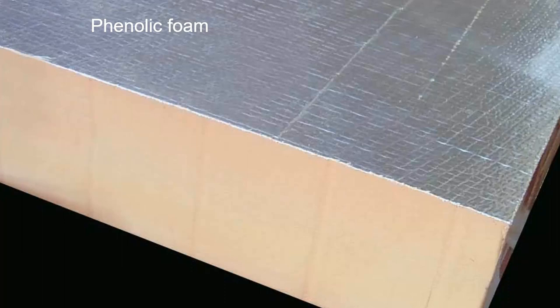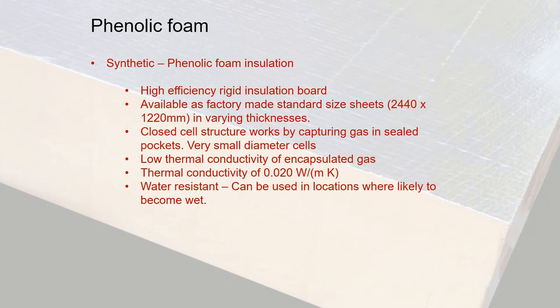A higher performance cousin of polyurethane is phenolic foam. It's a very similar material but with a better thermal conductivity of 0.020, and it's available in most of the same formats. Usually it comes with a silver foil on either side to act as an additional method of reflecting heat back into the space.